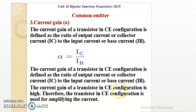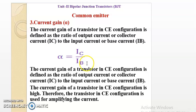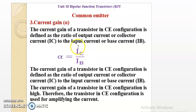The current gain of a transistor in CE configuration is high. Therefore, the transistor in CE configuration is used for amplifying the current. IC is greater than IB because base is lightly doped in a transistor, making IB less than IC. With the denominator being less and numerator being more, the current gain becomes very high.